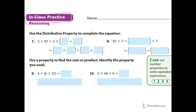For numbers seven and eight, we're going to use the distributive property. Look back at it — we're distributing the numbers. For five times 97, we use the expanded form of 97, which is 90 plus 7. So it equals five times 90 plus five times 7.